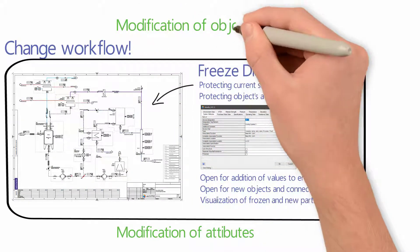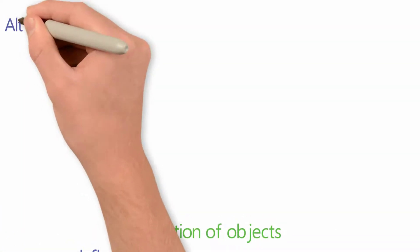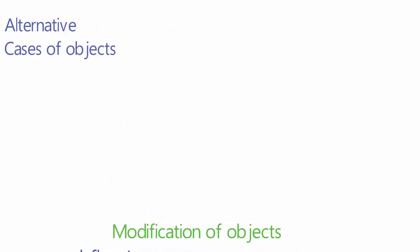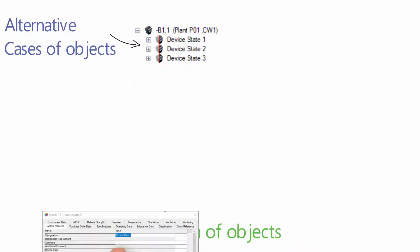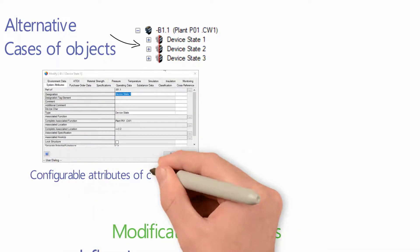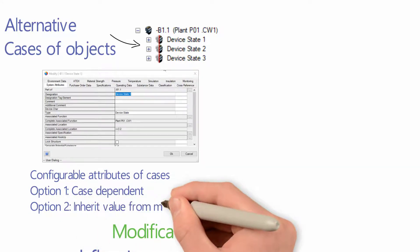The other situation is to modify objects. This can include objects' attributes or adding or deleting objects. One possibility is to use objects' cases. Cases are alternative states of the same object. Their attributes can be case-dependent or can be inherited from the main object. One case can eventually be accepted and merged into the main object.